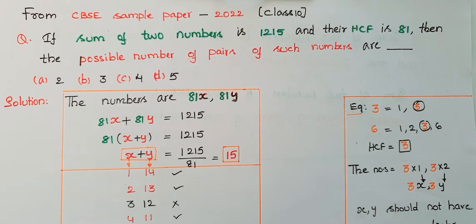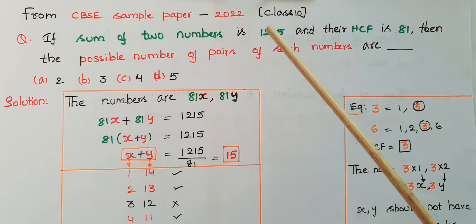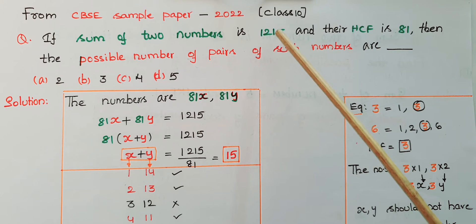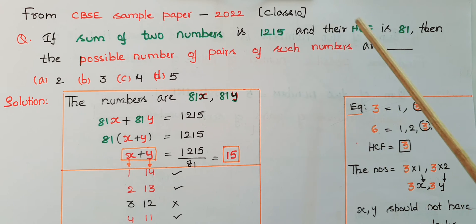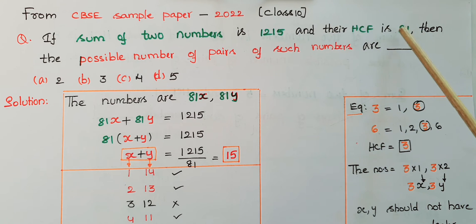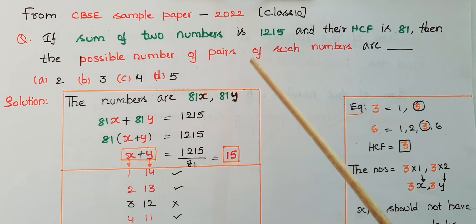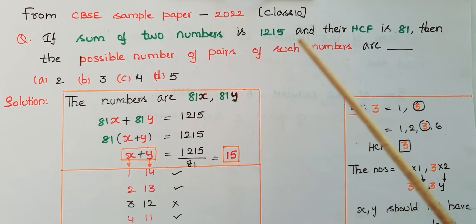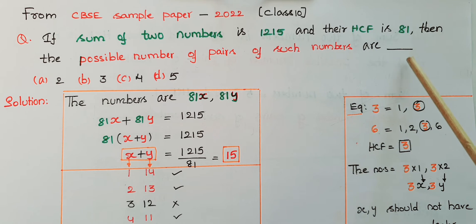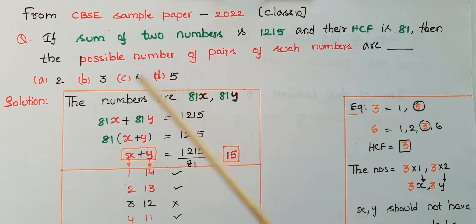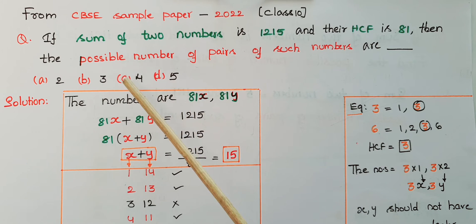Hello everyone, today I am going to tell the solution of the problem which is from CBSE sample paper 2022, class 10. The problem is: if the sum of two numbers is 1215 and their HCF is 81, then the possible number of pairs of such numbers are — four options are given and we have to find which option is correct.